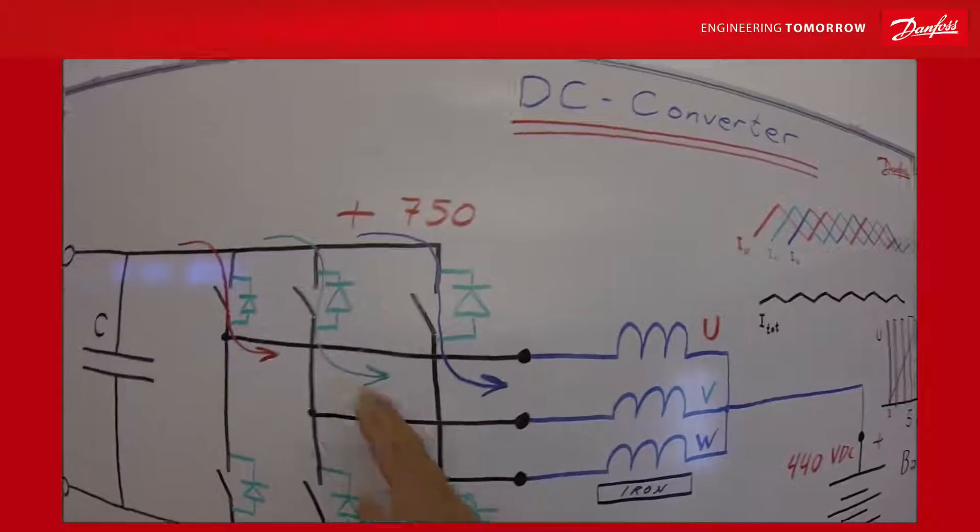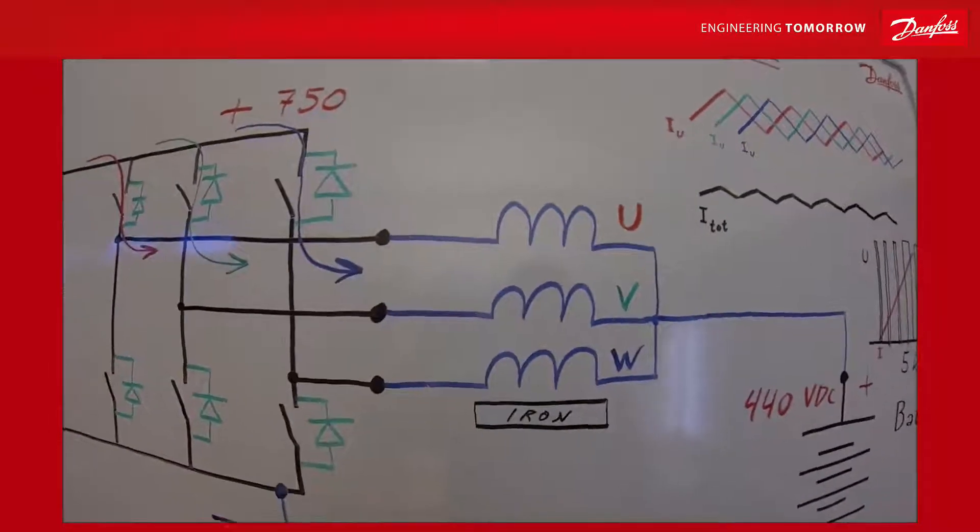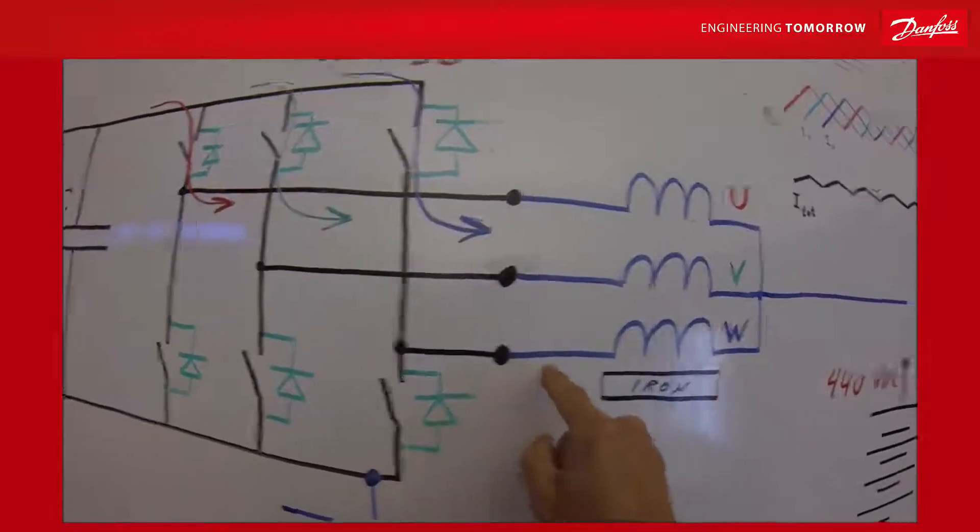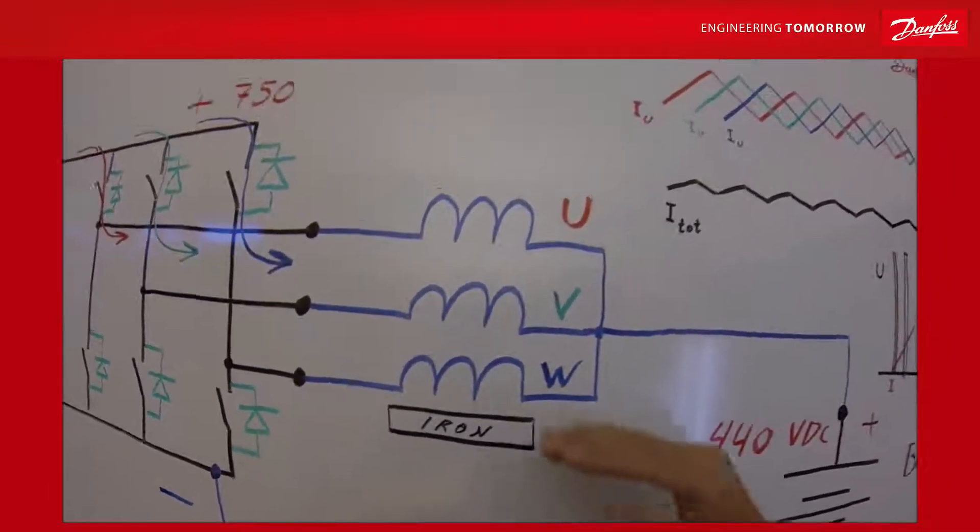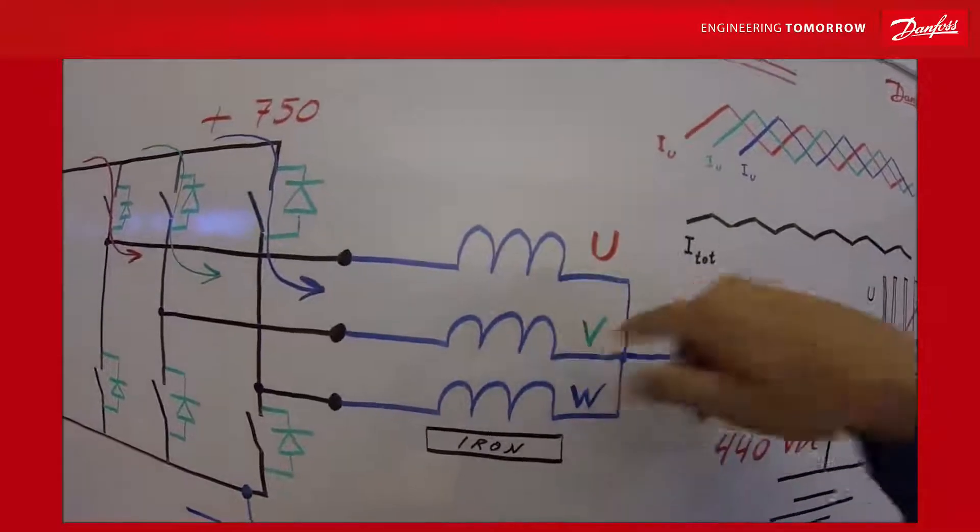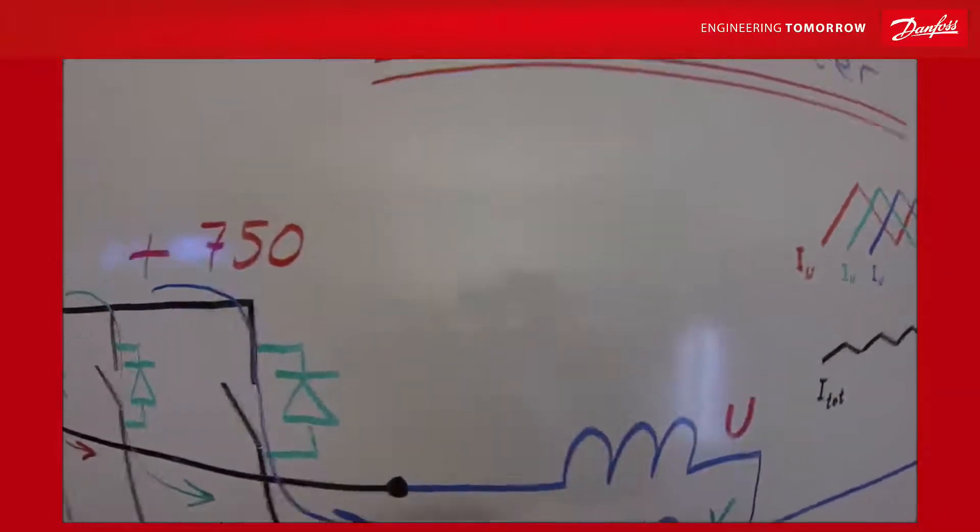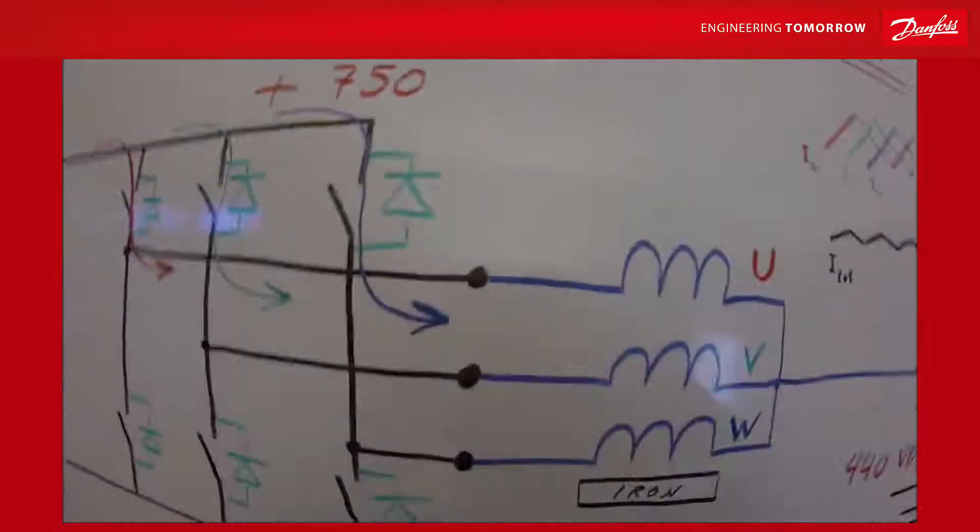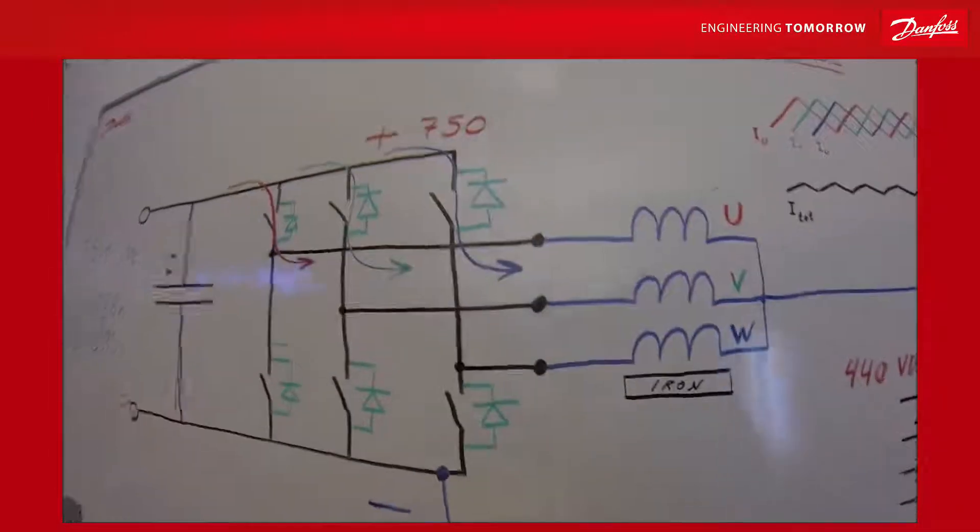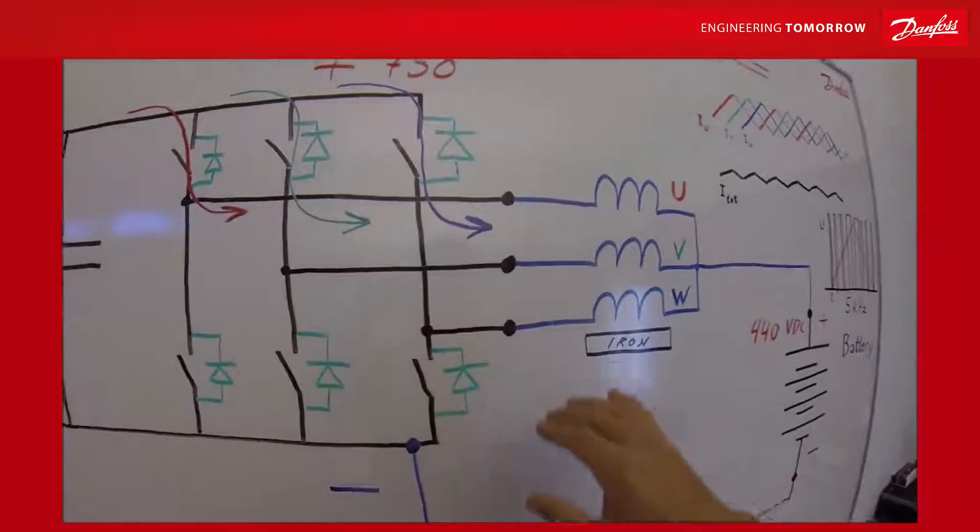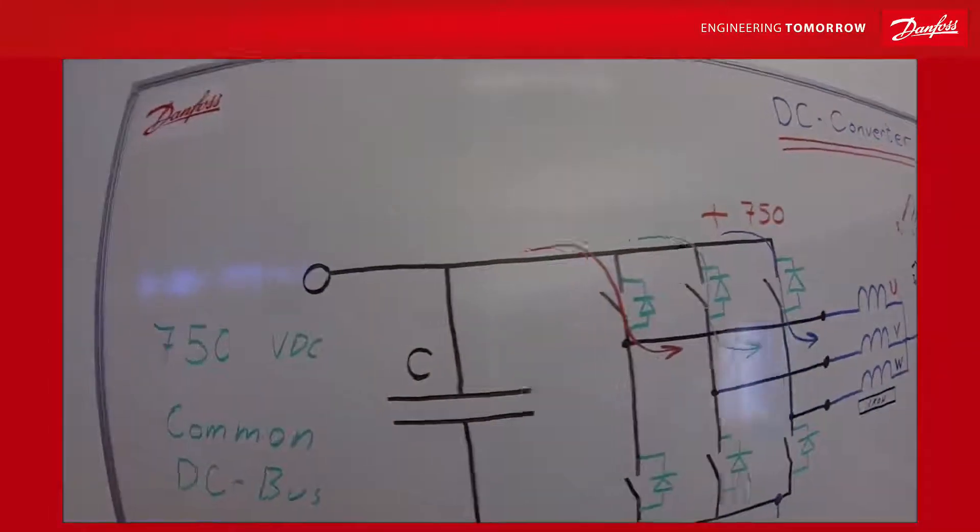What happens with DC boosting is that we set up a small current through the chokes. We saturate the iron and then we cut off the current. We connect these IGBTs so this potential is the same as this potential. The current is then stopped quite abruptly and the voltage will increase quite rapidly over the chokes. So we are boosting the DC voltage level here. The DC voltage level then will be higher than the common DC bus and the current then will start flowing through the freewheeling diodes on the frequency converter. By manipulating the chokes with this DC boosting, we then create a current coming from the battery into the freewheeling diodes and into the common DC bus system.